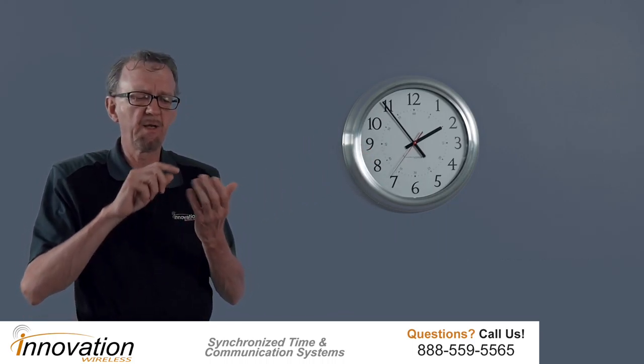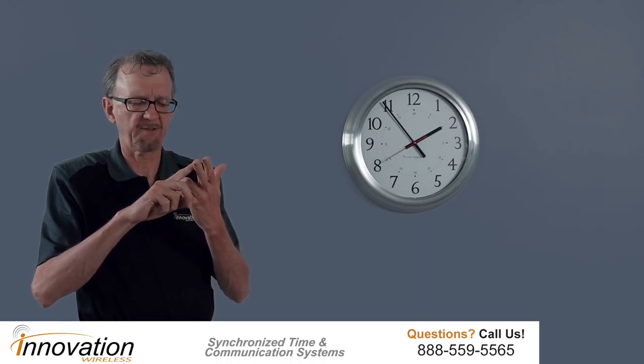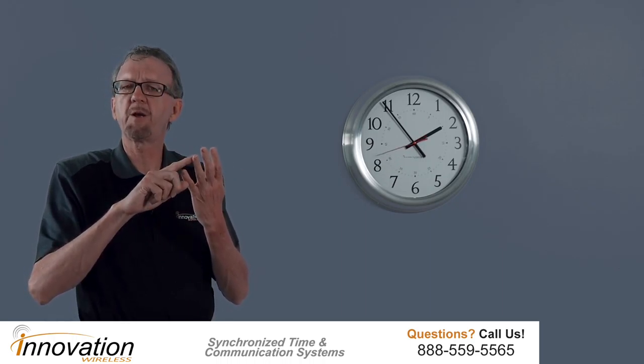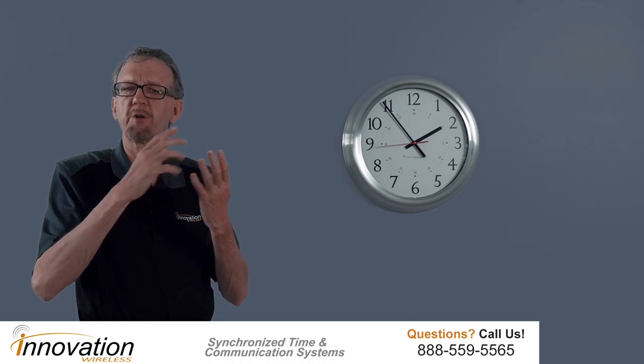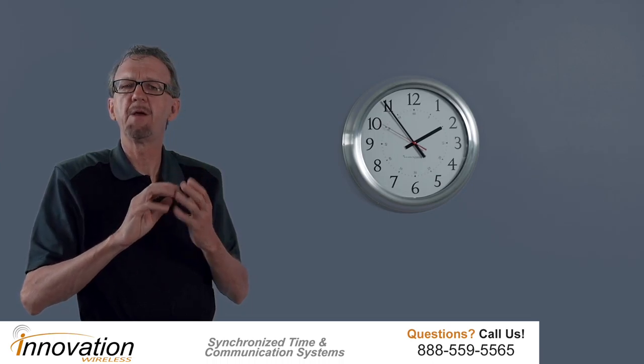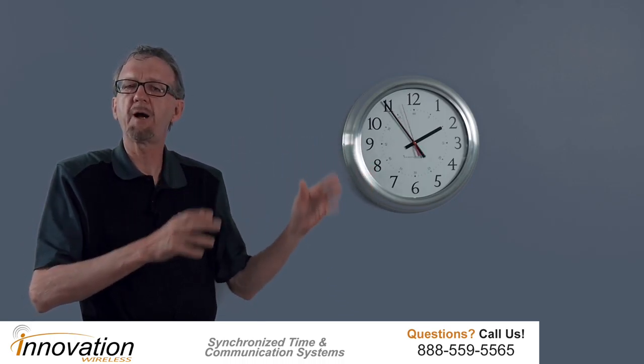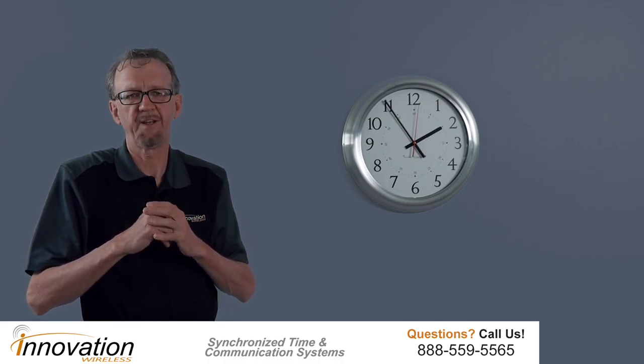So, in summary, the brushed aluminum clocks, two different sizes, 13-inch and 16-inch. It's part of the Kronosync wireless clock system. Therefore, it's going to display accurate time all the time. Automatically adjust for daylight savings time. Two D-cell batteries, standard D-cell batteries, going to last five years. So, once you put the batteries in the clock and hang the clock on the wall, you will not touch it for five years.